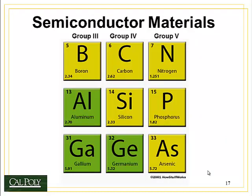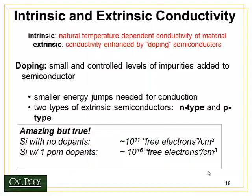Typical semiconductor materials generally fall into groups 3, 4, and 5 of the periodic table. Group 3 contains elements with 3 electrons in the valence shell, including boron, aluminum, and gallium. Group 4 has elements with 4 electrons in the valence shell — these are the most common semiconductors, specifically silicon and germanium. Group 5 has elements with 5 electrons in the valence shell.